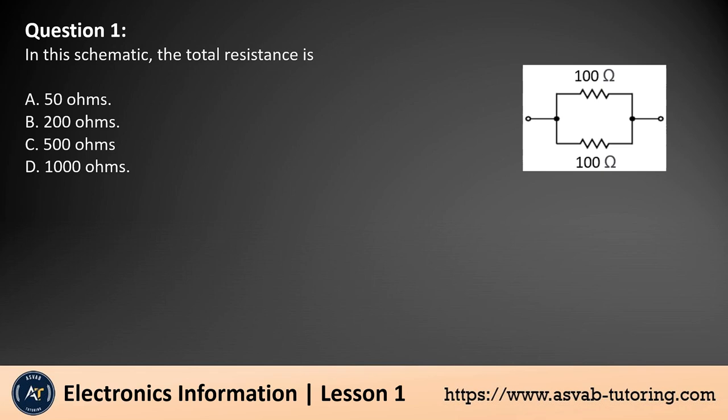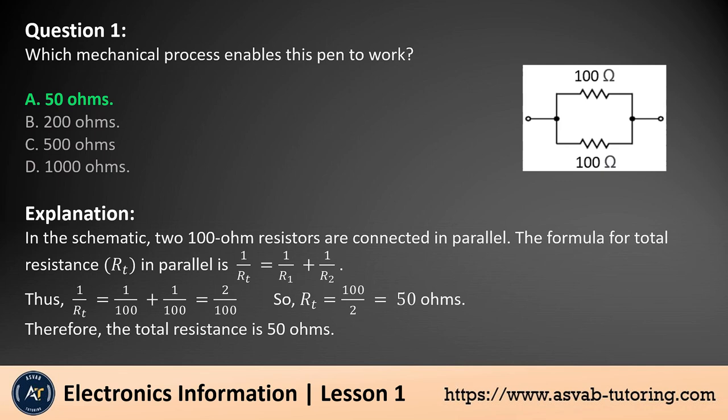Question 1. In this schematic, the total resistance is: a. 50 ohms, b. 200 ohms, c. 500 ohms, d. 1000 ohms. The answer is a. In the schematic, two 100 ohm resistors are connected in parallel. The formula for total resistance R_t in parallel is 1/R_t = 1/R_1 + 1/R_2. Therefore, the total resistance is 50 ohms.